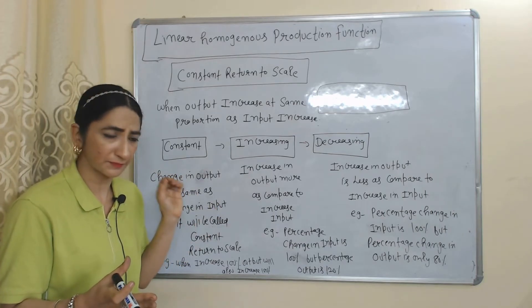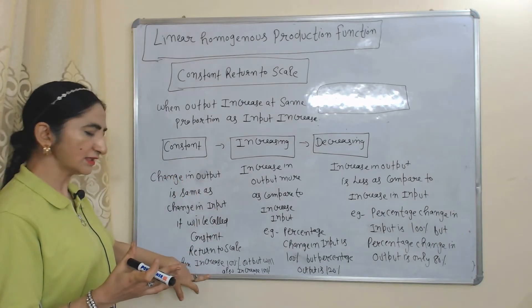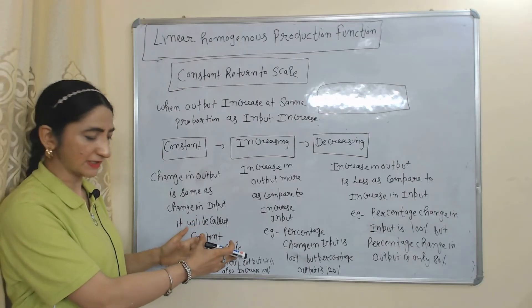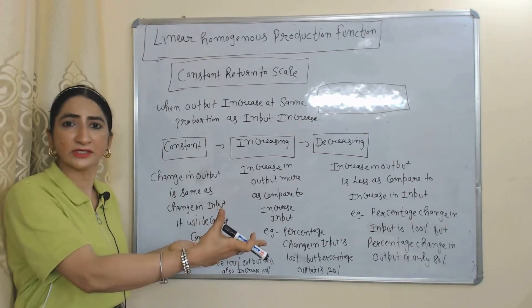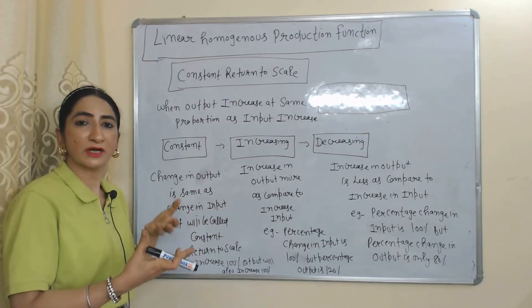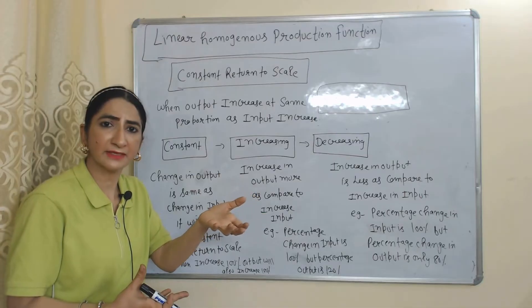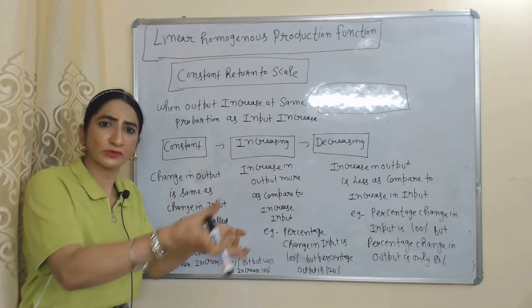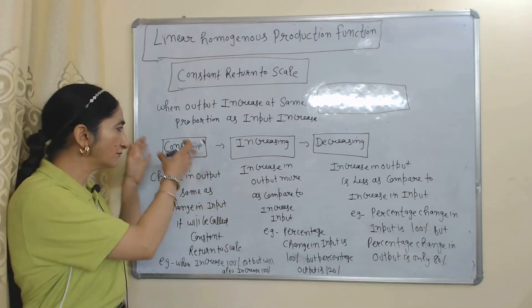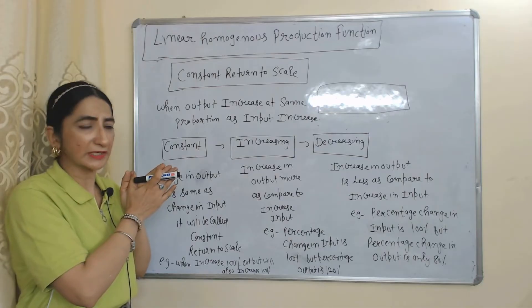Constant return to scale means the change in output is the same as the change in input. For example, if you increase your input by 100%, your output also increases by 100%. If you double your labor and capital, your output will also double. This is called constant return to scale.